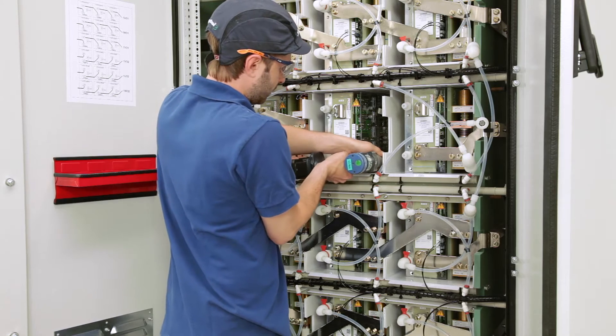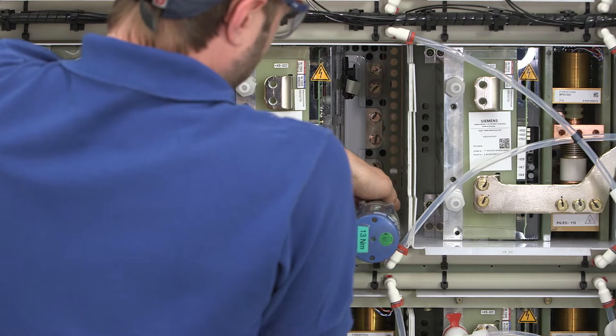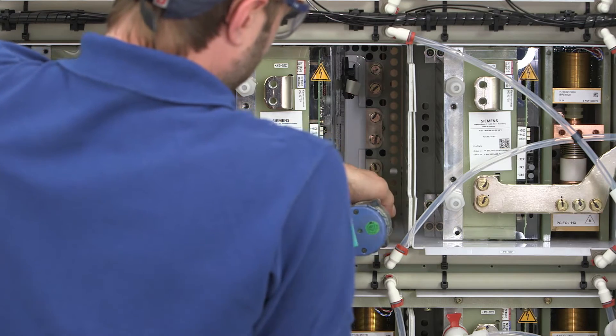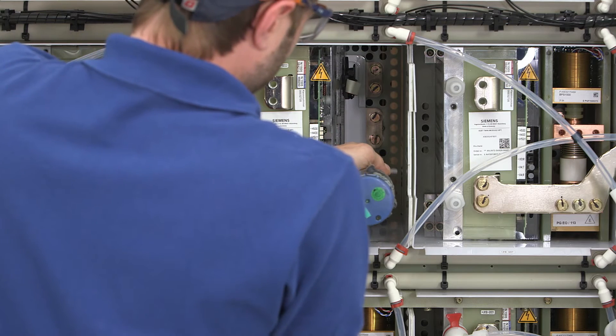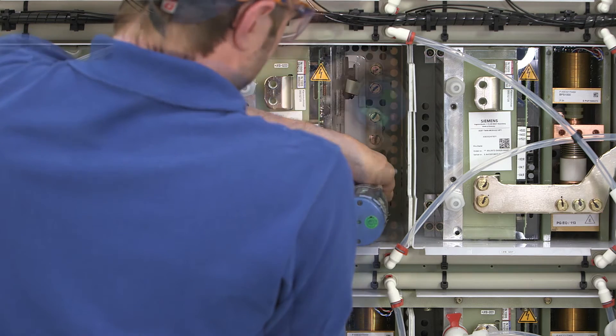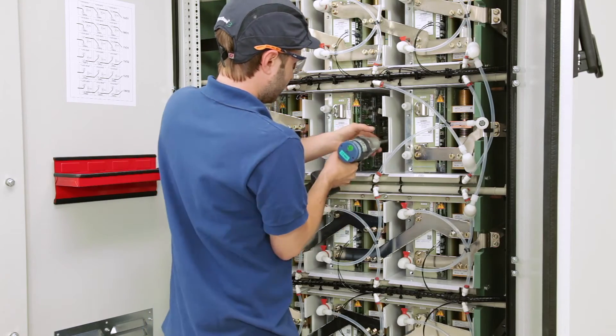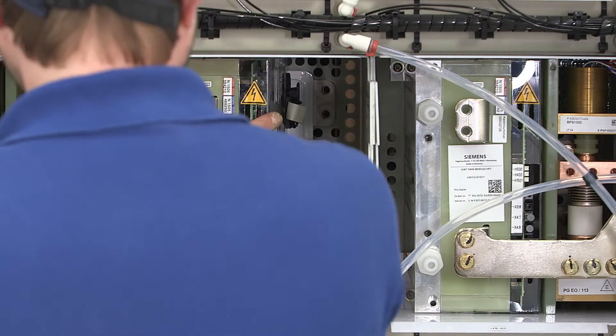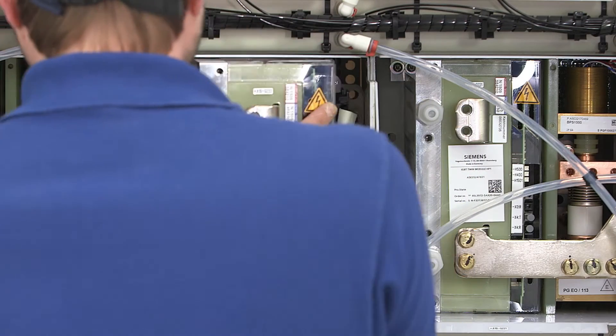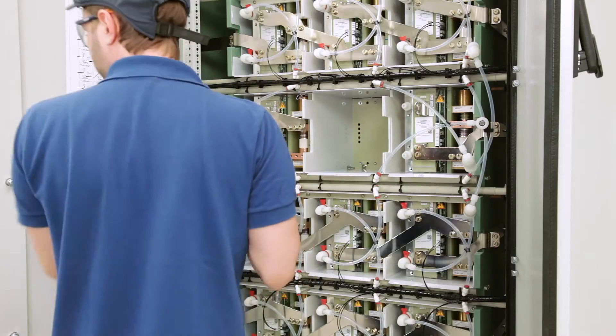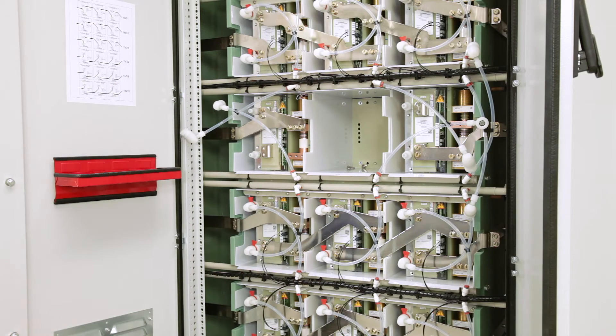Remove all screws between the IGBT module and the capacitor bus bar. Now you should be able to pull out the IGBT module by hand. It only weighs approximately 10 kilograms.